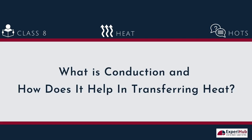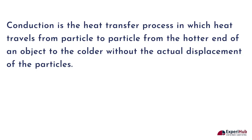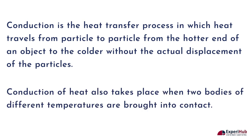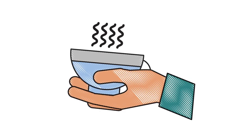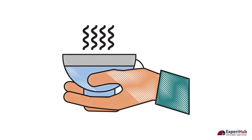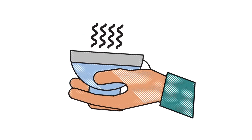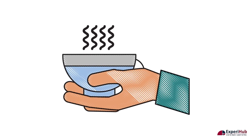What is conduction and how does it transfer heat? Conduction is the heat transfer process in which heat travels from particle to particle, from the hotter end of an object to the colder, without the actual displacement of the particles. Conduction also takes place when two bodies of different temperatures are brought into contact. An example is when you place your hand on a hot surface and your hand starts feeling hotter because heat is moving from the surface into your hand.